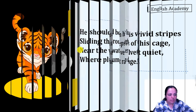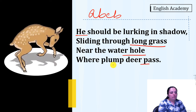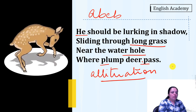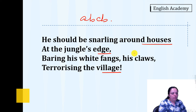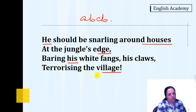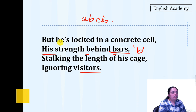Moving to the next stanza, personification is used again with the same ABCB rhyme scheme and enjambment. We also see alliteration — the repetition of a consonant sound in closely placed words — with the 'p' sound repeating in 'plump' and 'pass.' In the following stanza, the same rhyme scheme is used with 'edge' and 'village' rhyming, along with enjambment and personification. In the next stanza, 'bars' and 'visitors' rhyme, and alliteration appears in 'behind bars' with the 'b' sound repeating. Personification is used here as well.